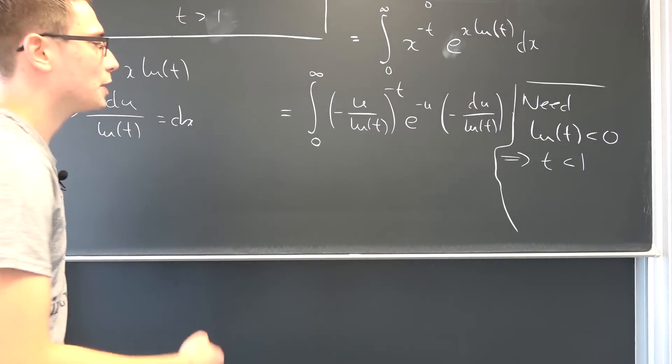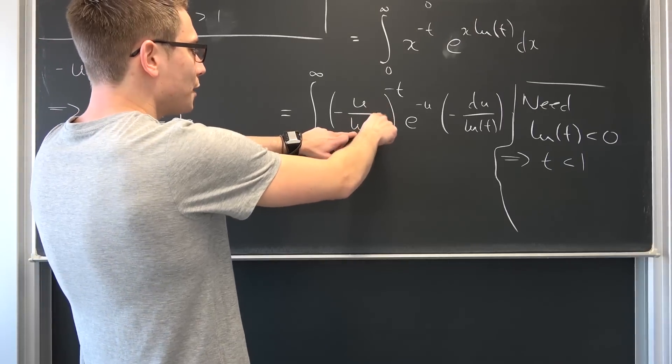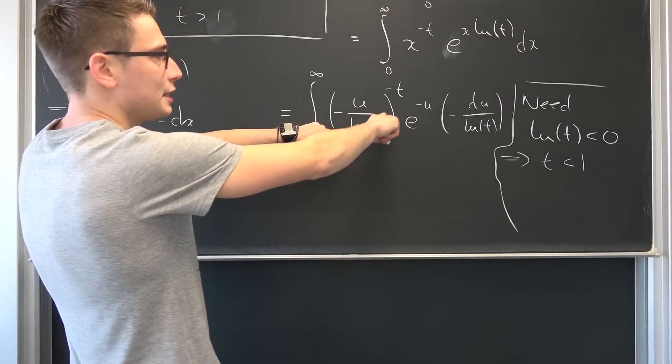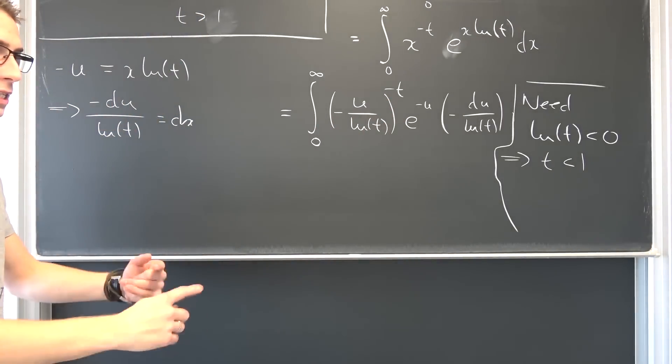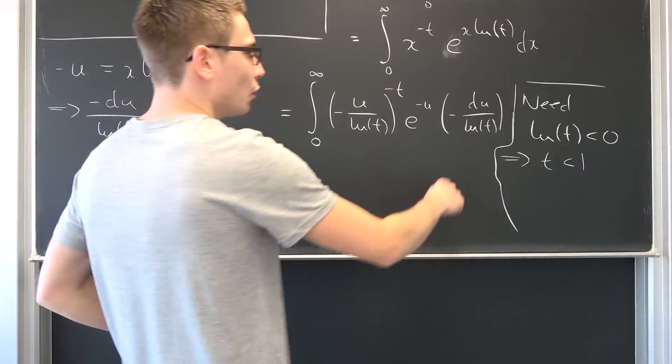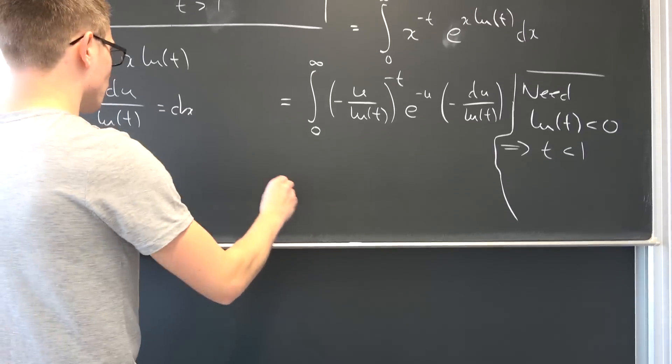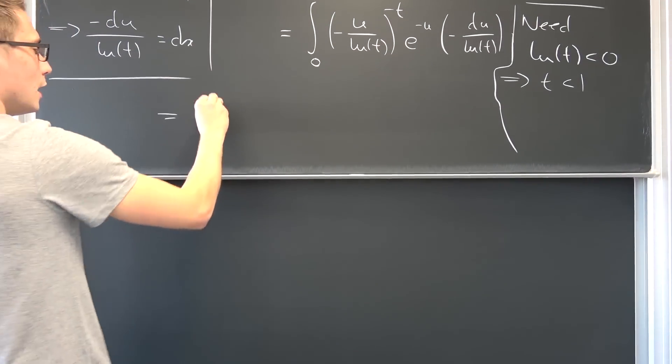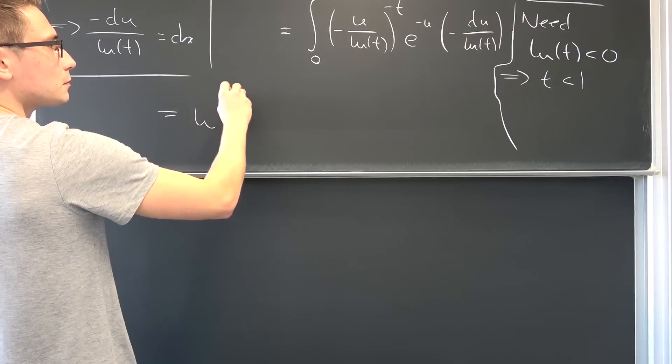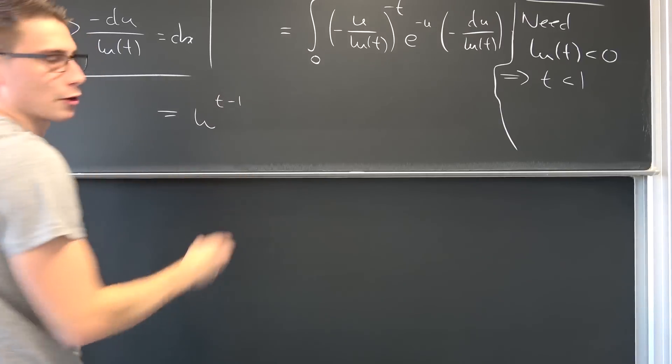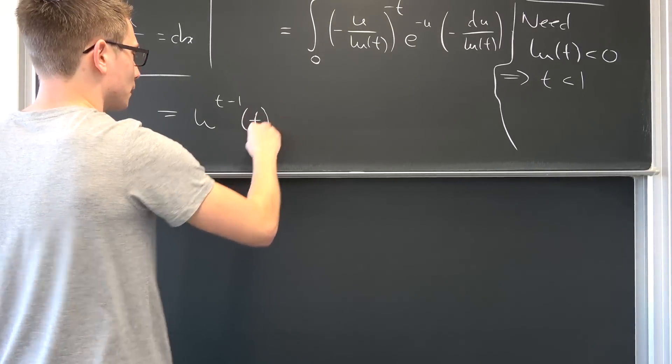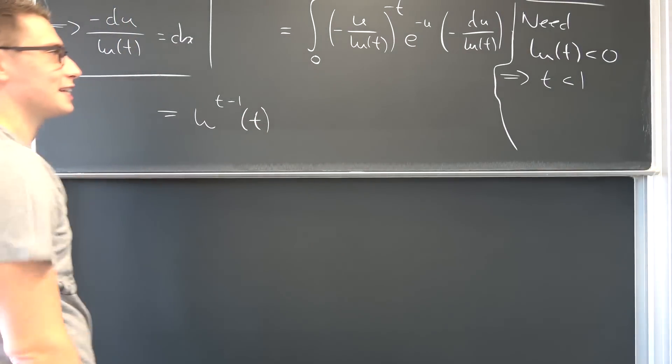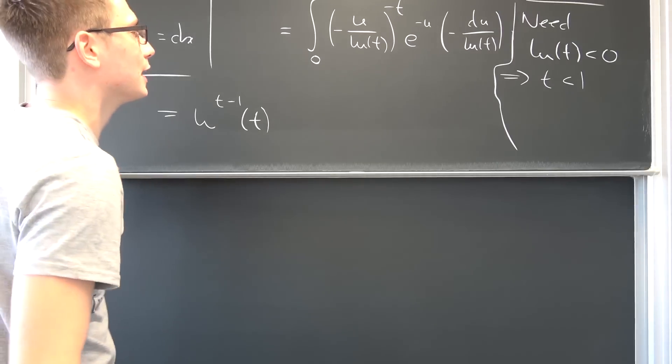Now we got a lot of stuff together. We have 1 over natural log of t to the negative t power. This makes natural log of t. Also, we have one over natural log of t. This overall, if we use the linearity of the integral, leads us with natural log to the t minus one power of t. Also, we have negative one to negative t plus one power, but we can take the reciprocal and it's going to be the same as negative one to the t minus one power.